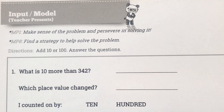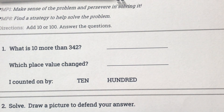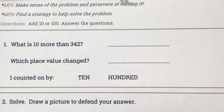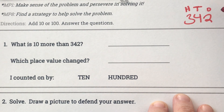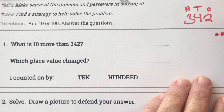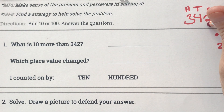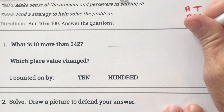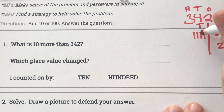Here is my first problem: what is 10 more than 342? They aren't giving us a lot of room to work, so we'll do our best. In 342, I have two 1's which equals 2, and four 10's — counting by 10: 10, 20, 30, 40.